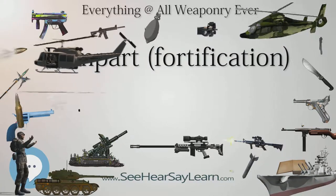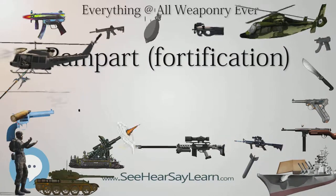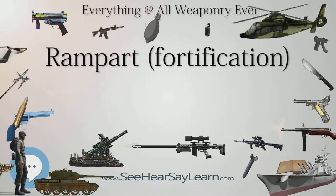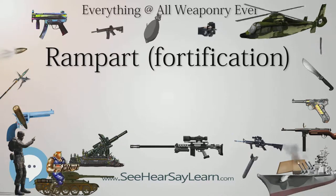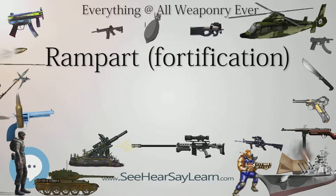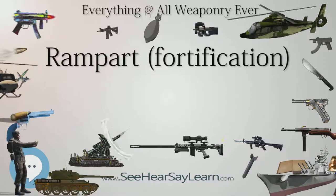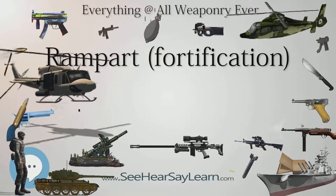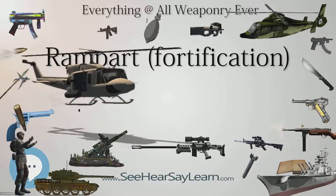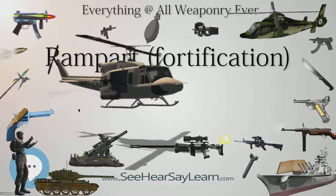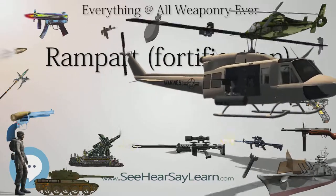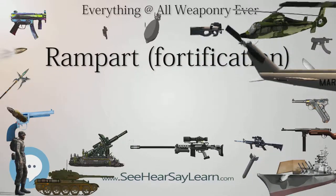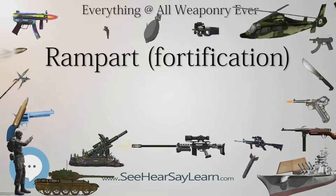Banquette: a continuous step built onto the interior of the parapet, enabling the defenders to shoot over the top with small arms. Barbette: a raised platform for one or more guns enabling them to fire over the parapet. Embrasure: an opening in the parapet for guns to fire through.